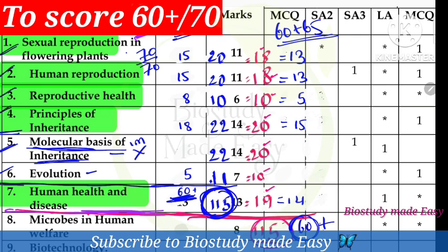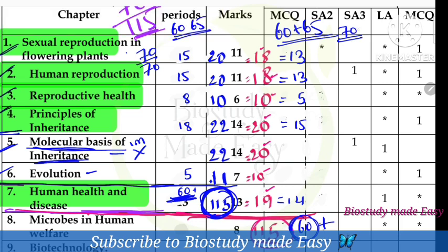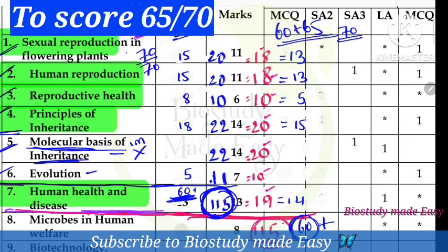Note: to score 70 out of 70, you obviously have to read all the chapters. But if you want 65 plus, you can choose to skip either evolution or molecular basis of inheritance — choosing one of those to skip still allows you to comfortably score 65 plus.